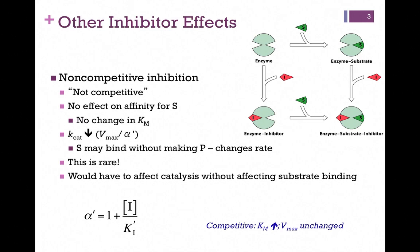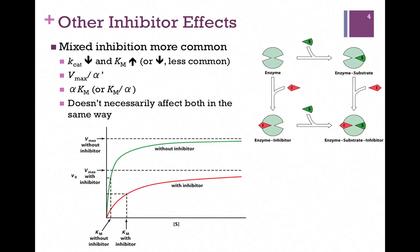As it turns out, non-competitive inhibition is pretty rare because it would require that the inhibitor has absolutely no impact on substrate binding and yet prevents the substrate from being converted to product. More commonly, we see what is referred to as mixed inhibition, where both kinetic constants change. Generally, Kcat or Vmax is lowered and Km is increased — a combination of non-competitive and competitive inhibition.